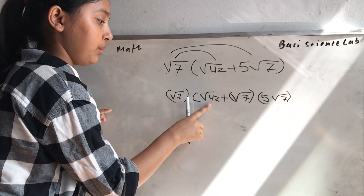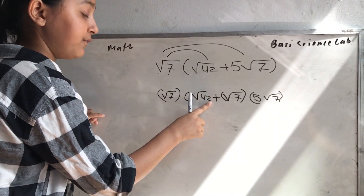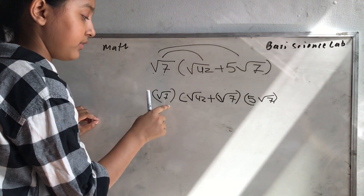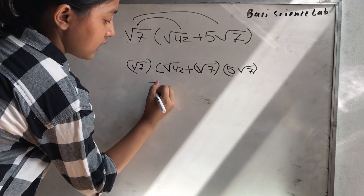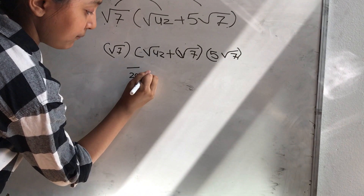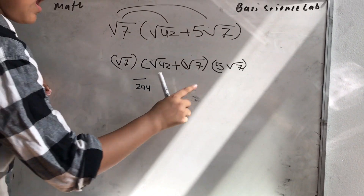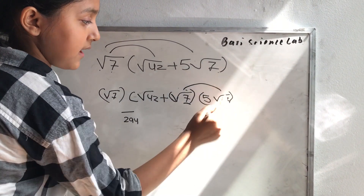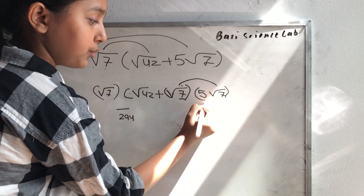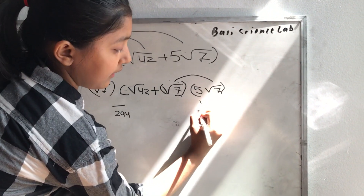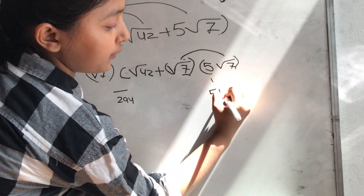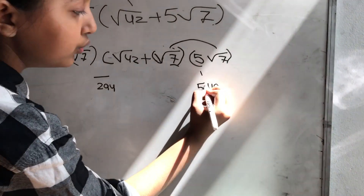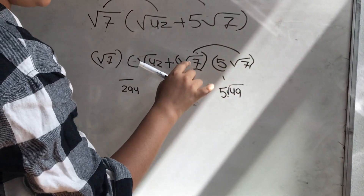Then you have to multiply root 42 times root 7. That is 294. And then you have to do root 7 times root 7, which is 49. And you bring down the 5 and put 5 times 49. Oh — root 49, because there's roots.